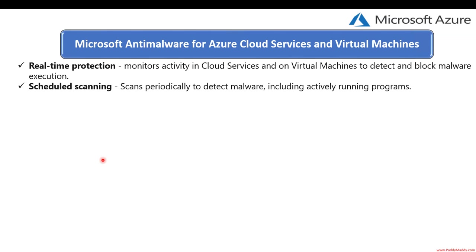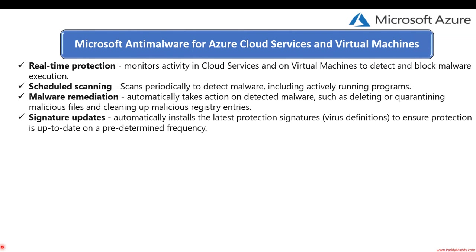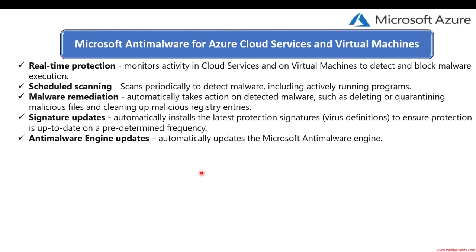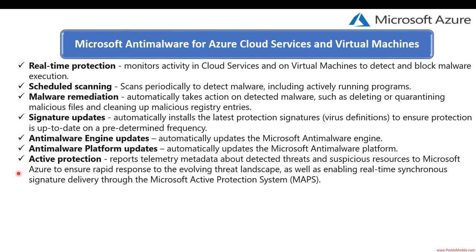Malware remediation automatically takes action on detected malware — quarantining, deleting, or cleaning up malicious files, registries, and physical file locations. Signature updates are delivered directly from Microsoft to protect against known and unknown viruses, and anti-malware engine updates are also received automatically, similar to signature updates.